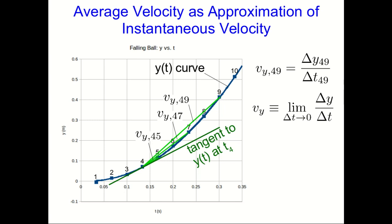And what we're really looking for is the tangent line to that curve, that function at t4. Now notice that those averages we've calculated, the 4-9 average, the 4-7 average, the 4-5 average, are getting closer and closer to that tangent line.